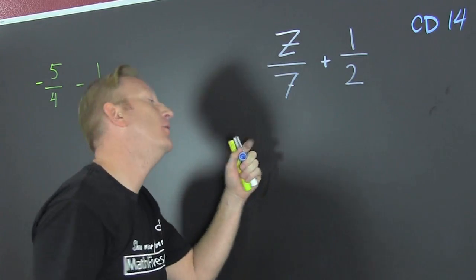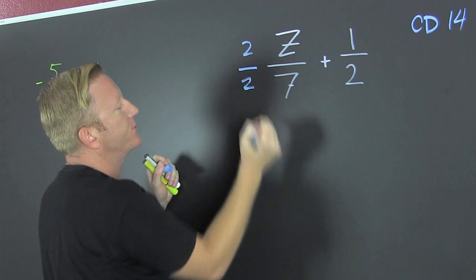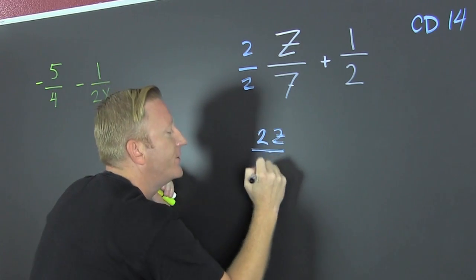For sure, for sure. So, what do I multiply 7 by to get 14? I got to do a deuce over a deuce. And I deduced that I got a doozy, woozy, all over 14.